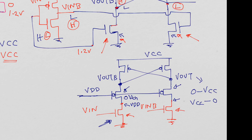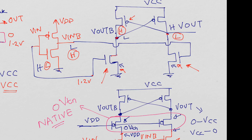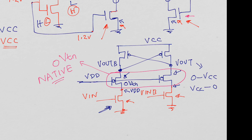In this arrangement the cascode devices should be zero-VT or very low VT — what we call native devices. Native devices are available in most technologies. This arrangement can be used when the high voltage device is not able to turn on properly with only 1.2 volts applied on the gate, so then we use this cascode arrangement instead.